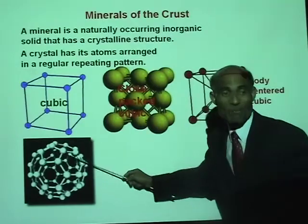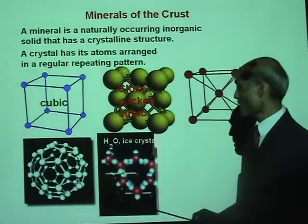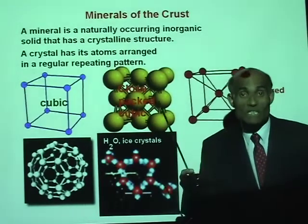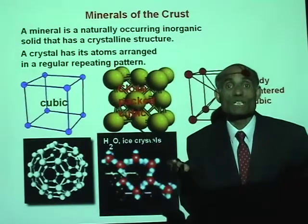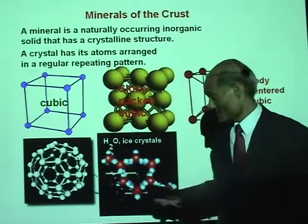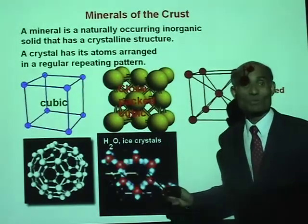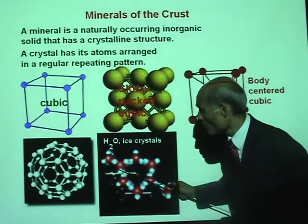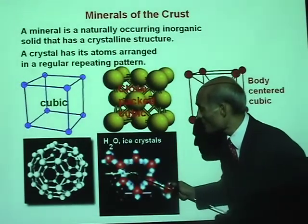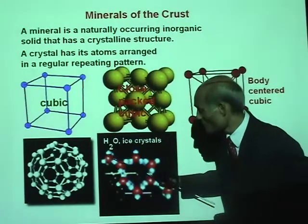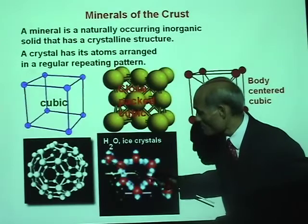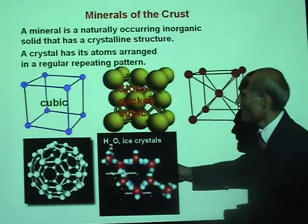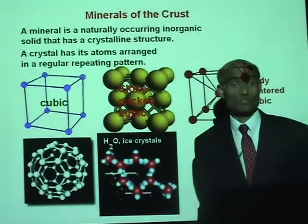This is actually called the buckyball — a beautiful arrangement. Now, if you look at the crystals of water: is water a crystal? Yes, when liquid water becomes a solid, ice is a crystal. Its atoms and molecules are arranged in very regular patterns. Water consists of two hydrogen atoms with one oxygen atom. You can see the oxygen and the two hydrogens, and this pattern continues in the arrangement — this is the water crystal, or ice crystal.